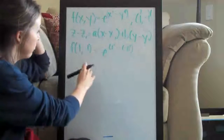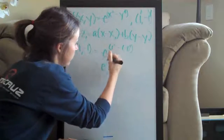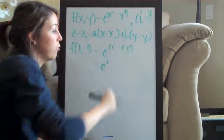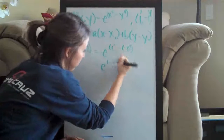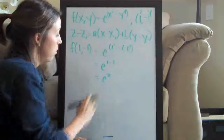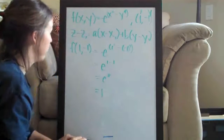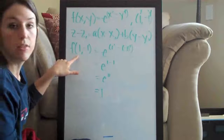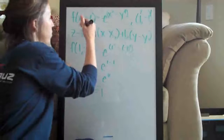We plugged in the point to the original function. We get e to the quantity 1 squared minus negative 1 to the fourth. 1 squared is 1, and negative 1 to the fourth is positive 1, so we have e to the quantity 1 minus 1, which is e to the 0. Anything raised to the 0 power is 1, so e to the 0 is 1. We were solving for z1, so z1 equals 1.